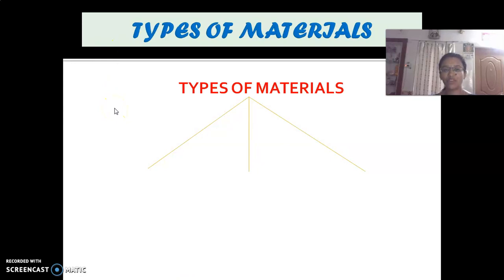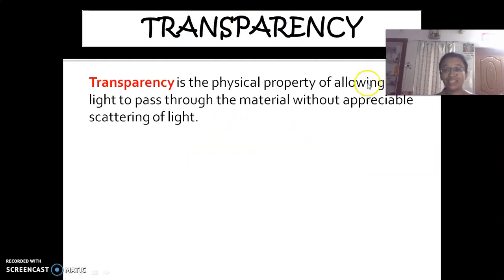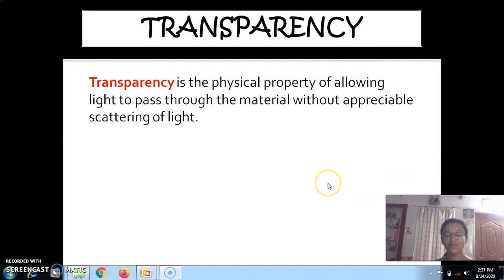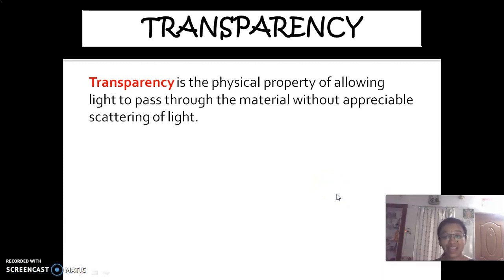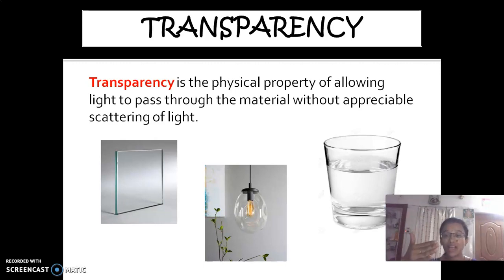The next topic is types of materials. What are the types of materials? Transparent materials, translucent materials, and opaque materials. What is transparency? The materials which allow the light to pass through them are called transparent. By being on one side, we are able to see the other side of the material. Glass is an example of a transparent material — it allows all the light to pass through itself.